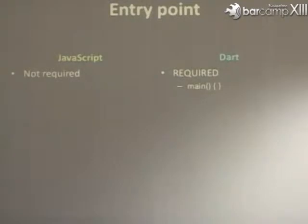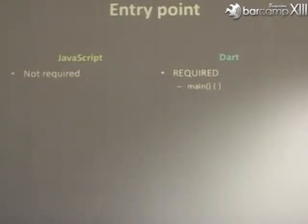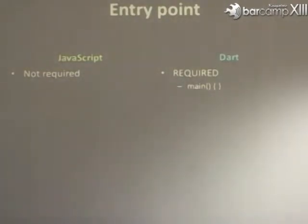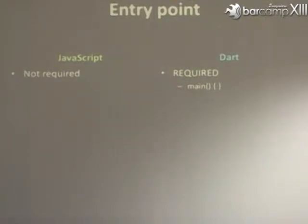Now the entry point. If you want to start your program in JavaScript, there is no fixed entry point — from where you want to start you can start, and you have to manually call that method. But in Dart there is an entry point — the method name is 'main'. Where main is found, that is your entry point, and from there you start. You can write not only web programs but also console-based programs and mobile applications in Dart.